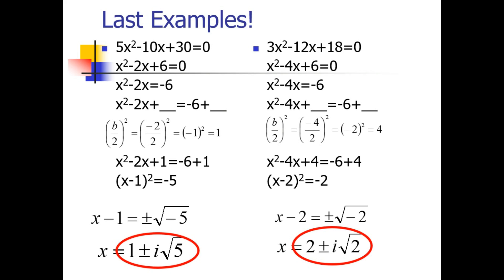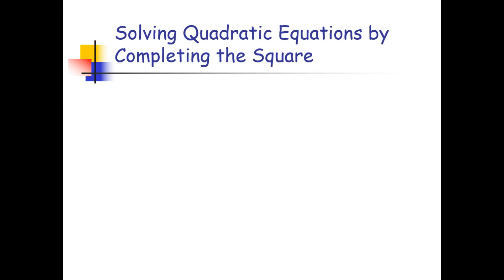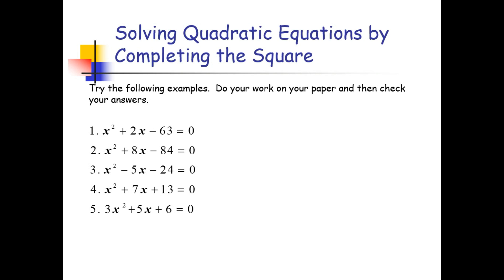I hope you have learned our lesson for today. It's very easy, right? Though we can say that it is very tedious. There will still be a video about solving quadratic equations. Now I will give you some exercises for you to try if you mastered this competency. We have 5 examples: x squared plus 2x minus 63 equals 0; x squared plus 8x minus 84 equals 0; x squared minus 5x minus 24 equals 0; x squared plus 7x plus 13 equals 0; and 3x squared plus 5x plus 16 equals 0.